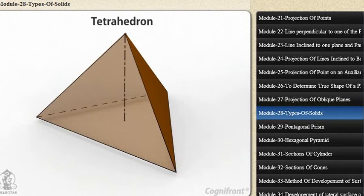One, tetrahedron. It has four equal faces, each an equilateral triangle.